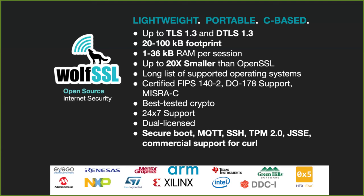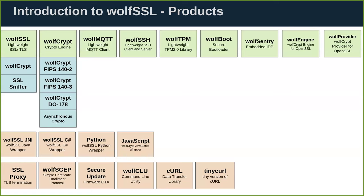Since the beginning, our engineering team has developed several embedded security products, including WolfCrypt with DO178 support, FIPS certification, a FIPS-ready offering, MQTT up to the V5 specification, SSH v2, TPM 2.0, and a secure bootloader known as WolfBoot, as well as Java wrappers and JSSE support, and commercial support for CURL.